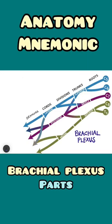Hello everyone, the NerdBerry here. In this video we will learn about a quick mnemonic which will help us to remember the different parts of the brachial plexus. Brachial plexus is a nerve network which has roots, trunks, divisions, cords, and branches as its parts.